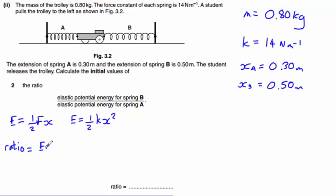E of B divided by the E for A, which is going to be half KxB squared divided by half KxA squared. Remember that the K's are the same here, so therefore we can do some canceling. We lose the half and we lose the K. So we're left with the ratio of XB squared divided by XA squared.